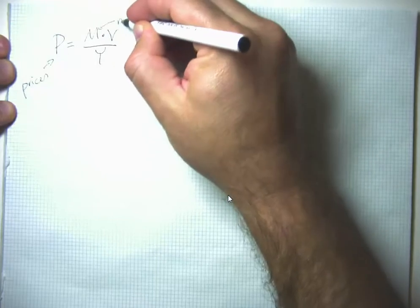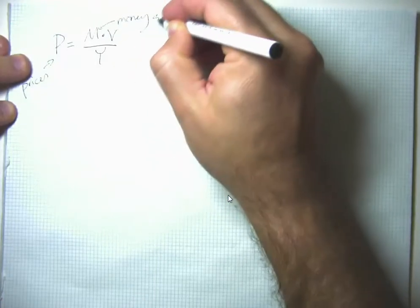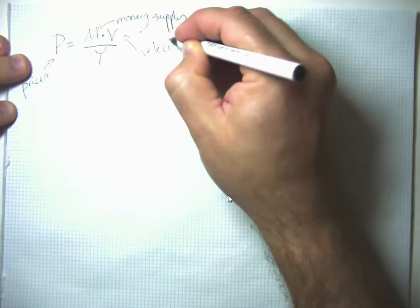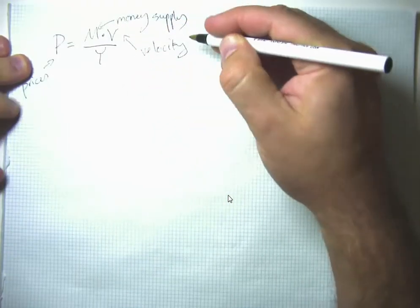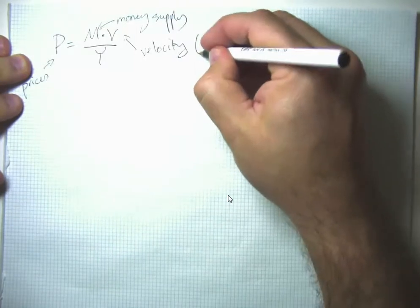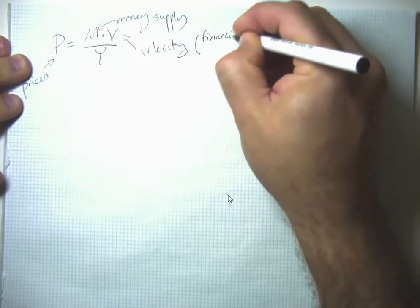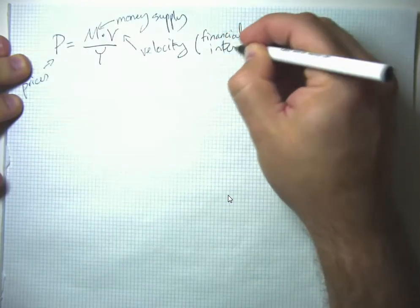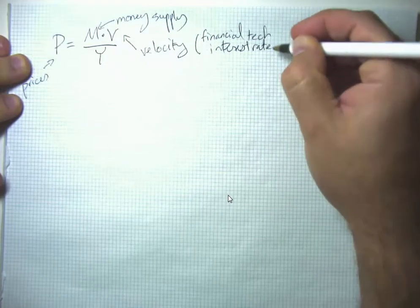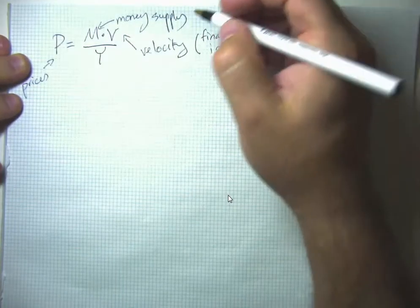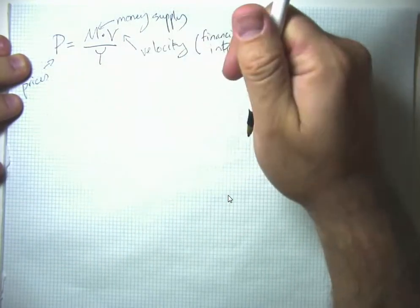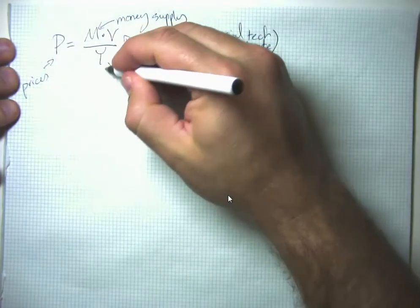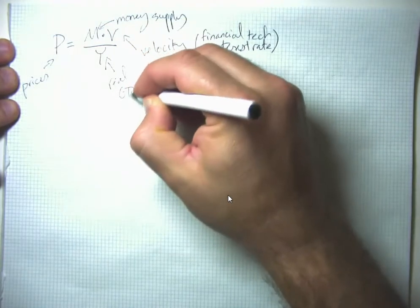Compared to the money supply, the velocity of money - how fast money changes hands, which we can take as a measure of financial technology and interest rates, also to some degree consumer sentiment or whether people feel the need to have a large precautionary balance in their checking account - and real GDP.